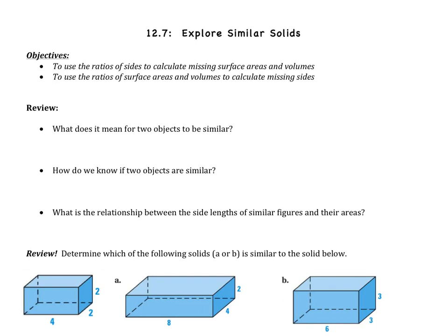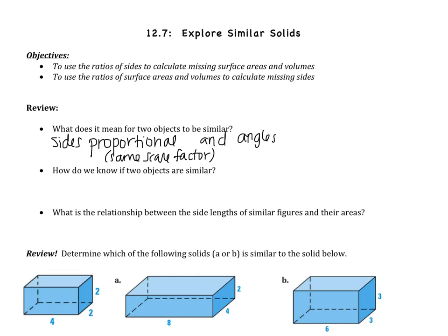Before we jump into these objectives, I want to review what it means for objects to be similar. What does it mean for two objects to be similar? This goes back to first semester. It means that their sides are proportional — they have the same scale factor — and the angles are congruent. I think of similar figures as taking a figure and blowing it up or shrinking it down.